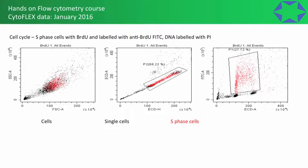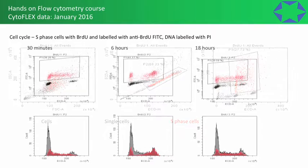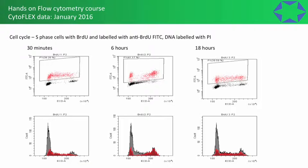We also have live cells — not fixed — labeled with Hoechst 33342 to label DNA, and dead cells labeled with propidium iodide. After gating on live cells and doublet discrimination, we get G1, S, and G2 peaks — slightly broader than with ethanol-fixed cells because the DNA binding dye doesn't have quite as good access when cells are live. We can clearly see the different stages of the cell cycle. We've also got BrdU-labeled S-phase cells, with cell cycle profile on the x-axis and FITC-labeled BrdU on the y-axis.